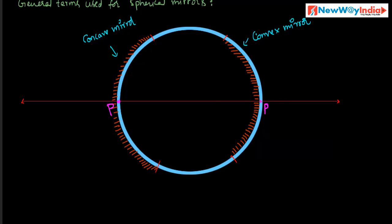Next, center of curvature. What is center of curvature? It is the center of the sphere of which the spherical mirror is a part. This is the center of the hollow sphere, and it is called the center of curvature. The center of the hollow sphere becomes the center of curvature of the two spherical mirrors. It is denoted by capital C.